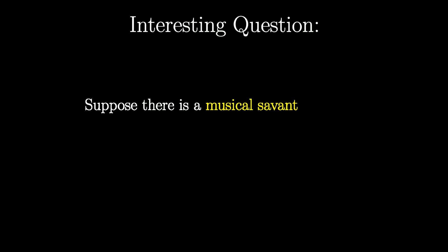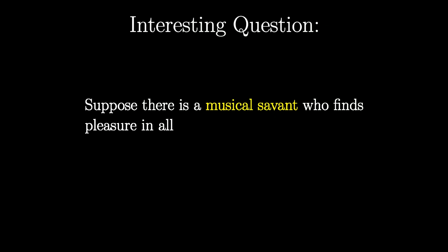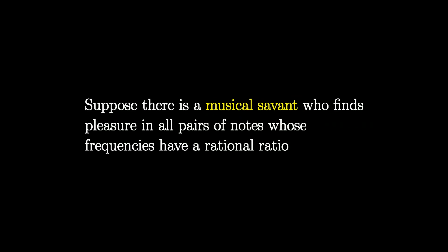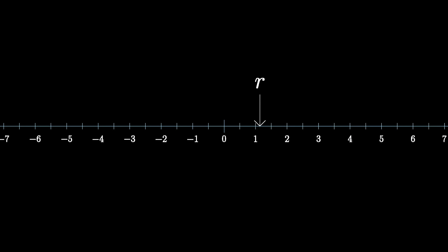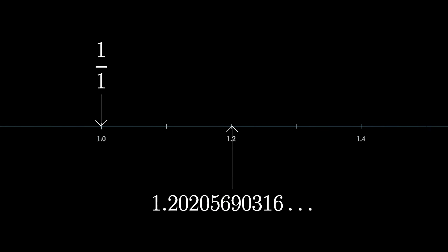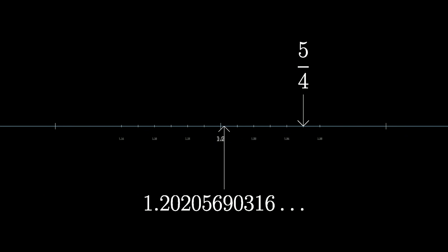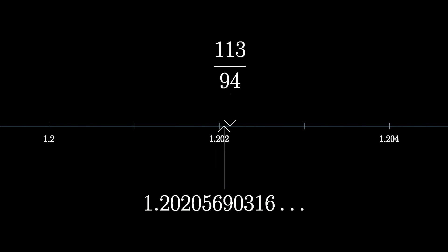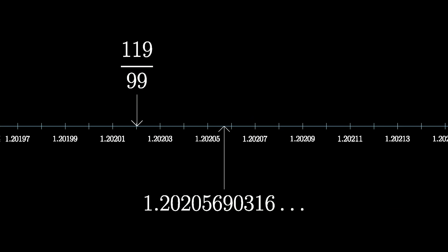This leads me to an interesting question. Suppose there is a musical savant who finds pleasure in all pairs of notes whose frequencies have a rational ratio, even the super complicated ratios that you and I would find cacophonous. Is it the case that she would find all ratios r between 1 and 2 harmonious, even the irrational ones? After all, for any given real number, you can always find a rational number arbitrarily close to it, just like 3 halves is really close to 2 to the 7 over 12.